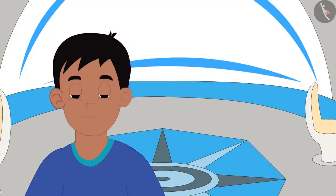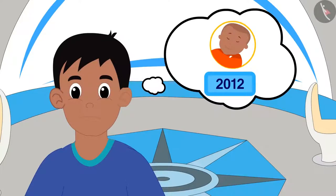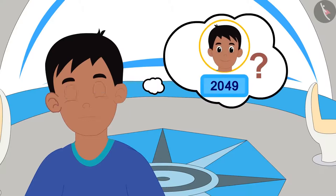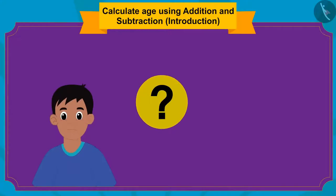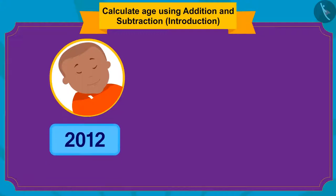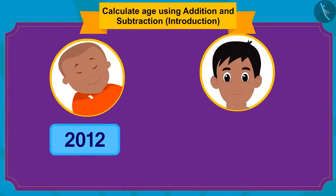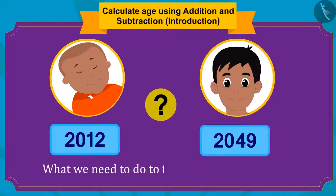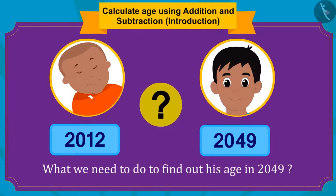Raju is thinking that he was born in the year 2012. So, how old will he be in 2049? Children, can you find an answer to this question? Raju was born in 2012, and now they were in the year 2049. So, what do we have to do to find out his age in 2049?